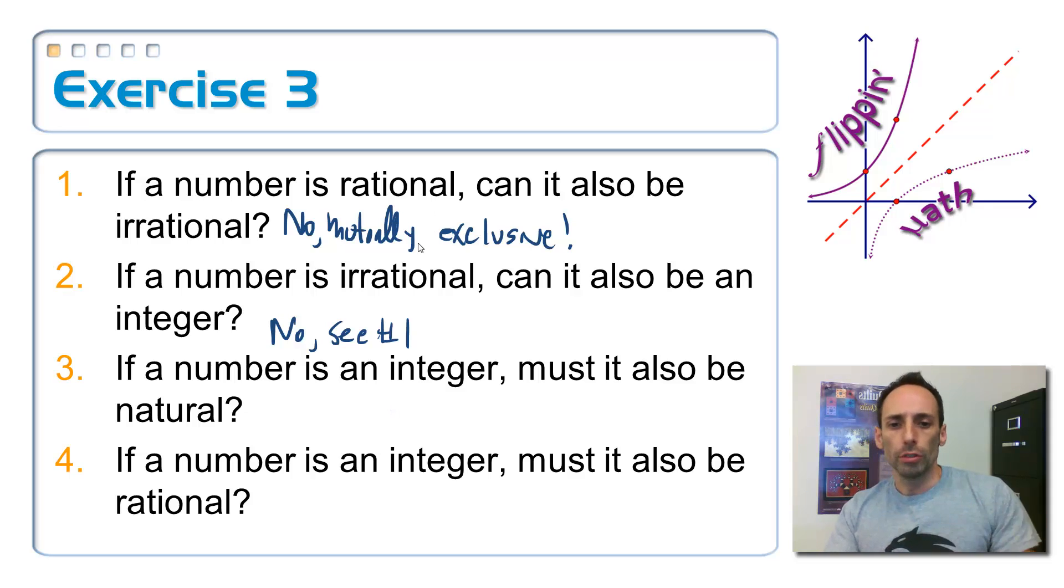Number three. If a number is an integer, must it also be natural? If a number is an integer, must it also be natural? Well, no, because what about zero? What about all the negative ones, right? So, we're going to have to say no on that one, too. What about the negatives?